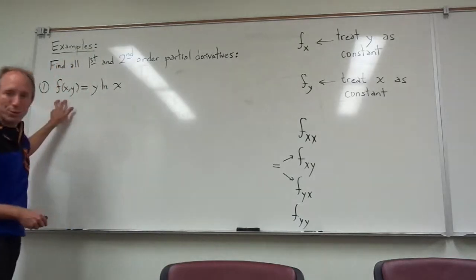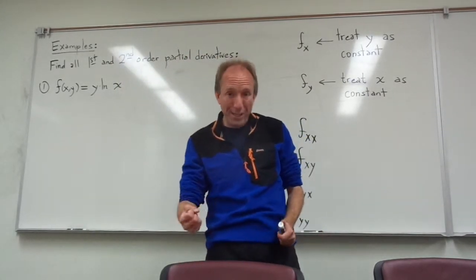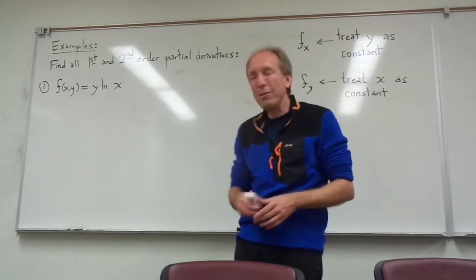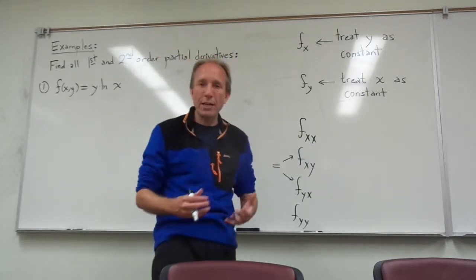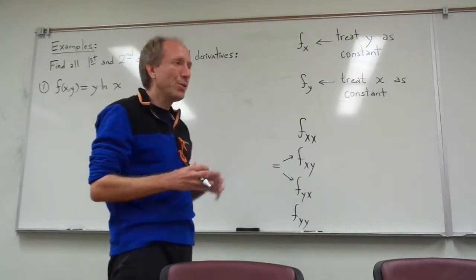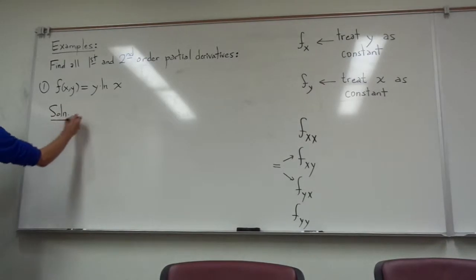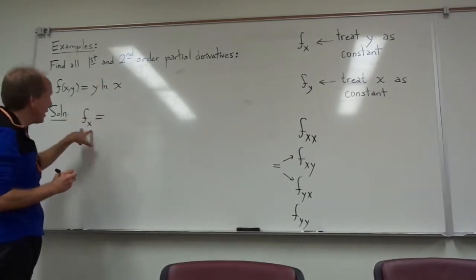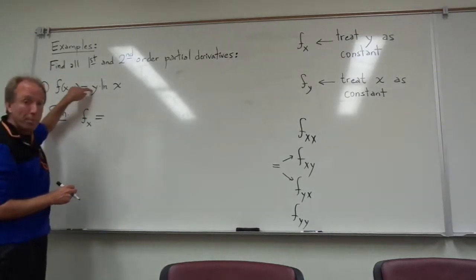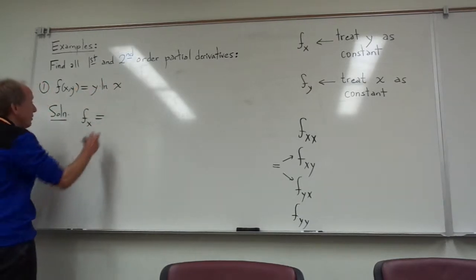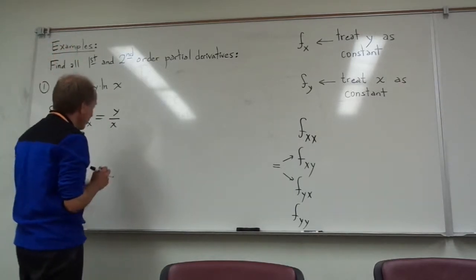Let's take f(x,y) = y times the ln of x and calculate these partial derivatives. Feel free to pause the video and try to work these out yourself first. So if I have this function, y times ln(x), and I want to calculate f sub x, the partial derivative with respect to x, I'm going to treat the y as if it was a constant number. I just take the ln of x and differentiate it, giving me 1 over x. So I end up with y over x as my first partial derivative with respect to x.